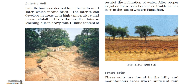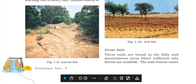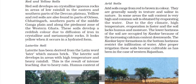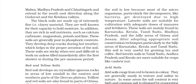Laterite soil is developed in areas where there is high temperature and heavy rainfall, which results in intense leaching. The humus content in this soil is very low because many microorganisms, particularly decomposers like bacteria, are destroyed by high temperature. This soil is suitable for cultivation when adequate doses of manure and fertilizers are given.